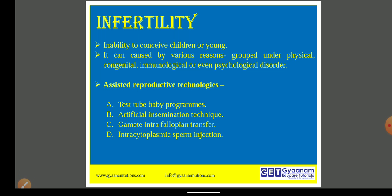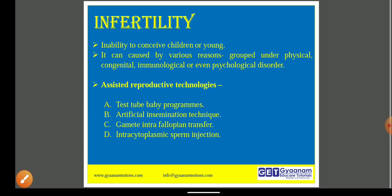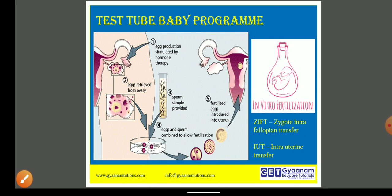Specialist infertility clinics can help in diagnosis and proper treatment. If couples are still unable to conceive, then some assisted reproductive technologies can be used. We are going to see all the technologies one by one. Let us start with the first technology, that is the test tube baby program.